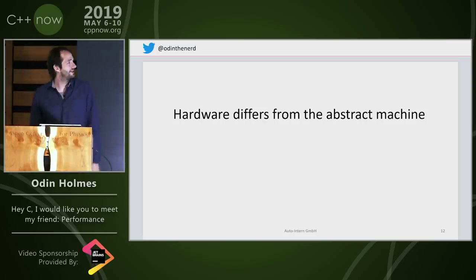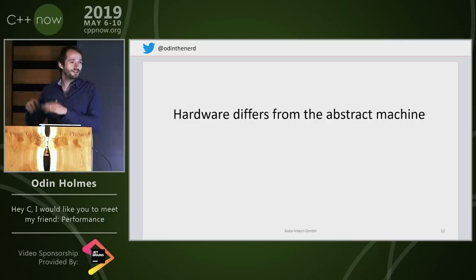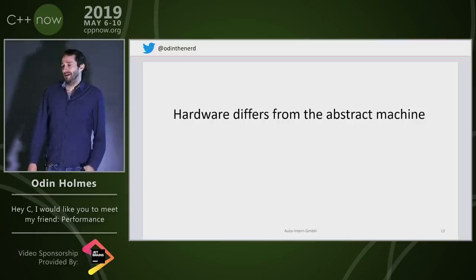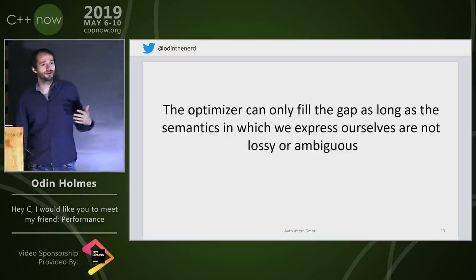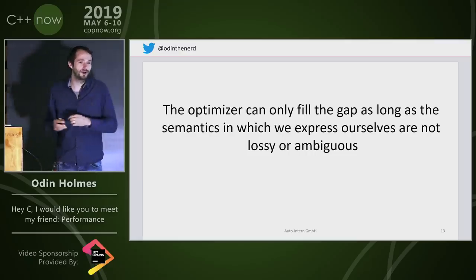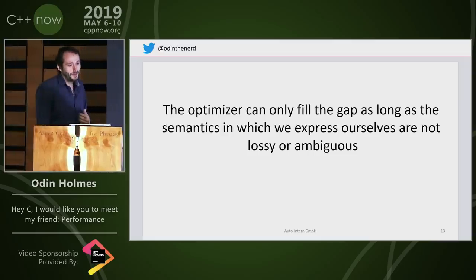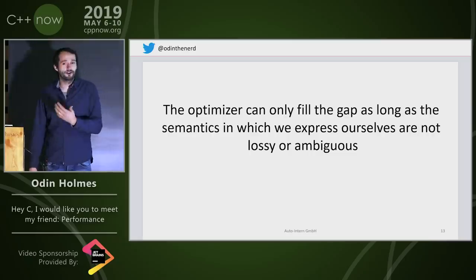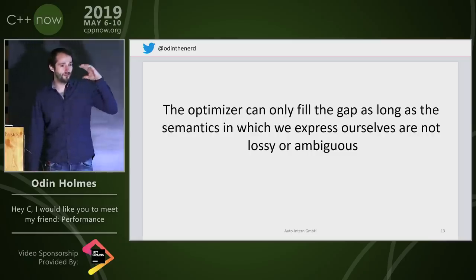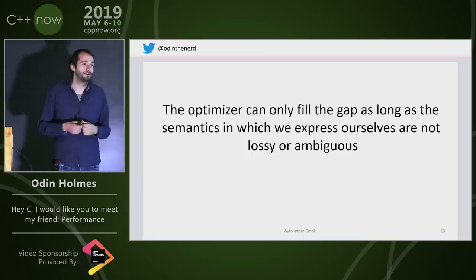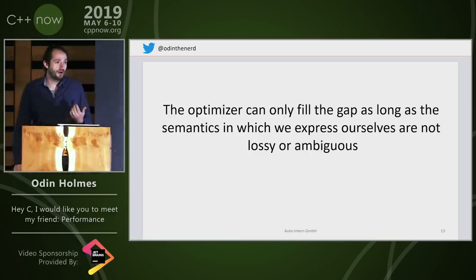Hardware differs from the abstract machine — obviously. The abstract machine is a somewhat simplified von Neumann architecture from before any of us were born. The optimizer makes up the difference: we program conceptually against the abstract machine and the optimizer says, well, you're actually on that concrete machine, so I'm going to do all the optimization to make this performant. But expressing ourselves to Clang IR — there's a lot of loss in domain-specific knowledge. In C++ I sometimes don't even have the syntax to express what I know about the problem that could help the optimizer.